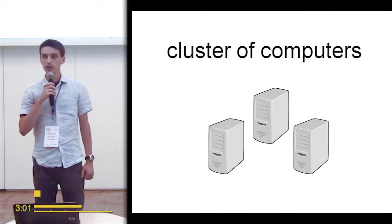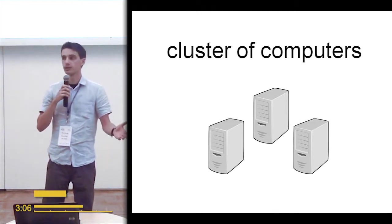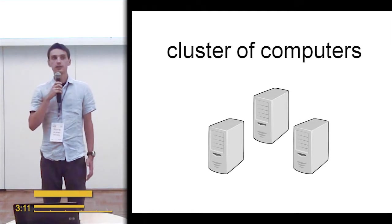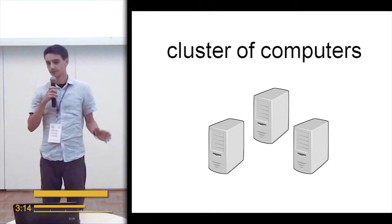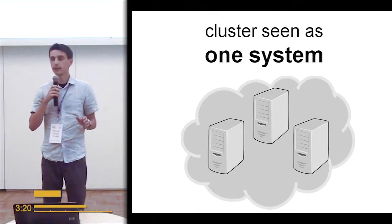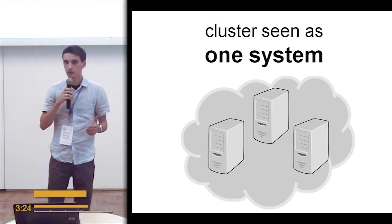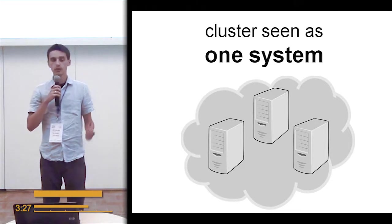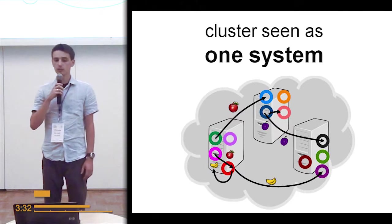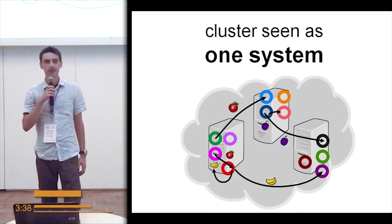In the past, if you had a network of computers, you'd program them separately — one computer, one operating system; three computers, three operating systems. What's going to change is that those will be seen as one super system. Programmers will no longer need to worry about making it all work together — they can focus on developing the applications themselves. These applications will run on supercomputers, sometimes called clouds, passing information around by copying and cloning.